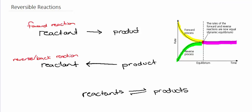The notation that we use to represent a reversible reaction is a reversible arrow in the middle, which shows that the reactants are turning into products and the products are turning back into reactants.